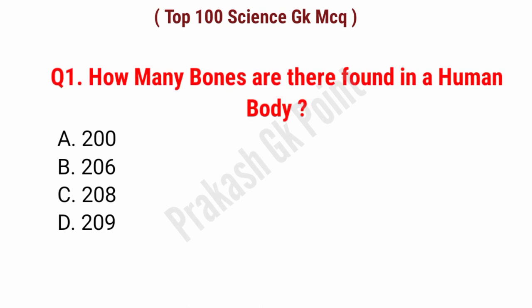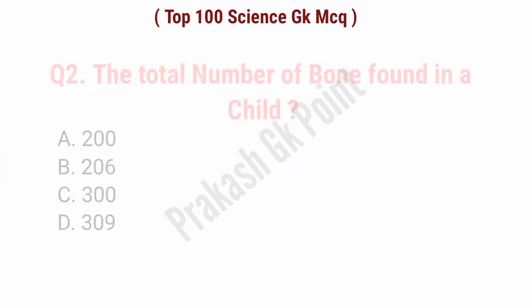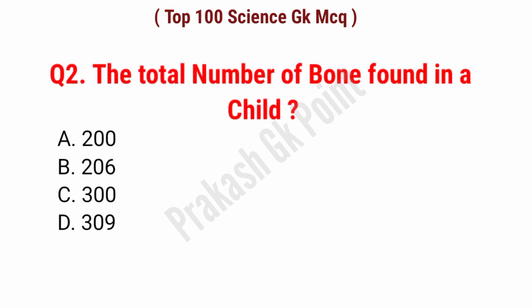First question: How many bones are there found in a human body? Answer: option B, 206.